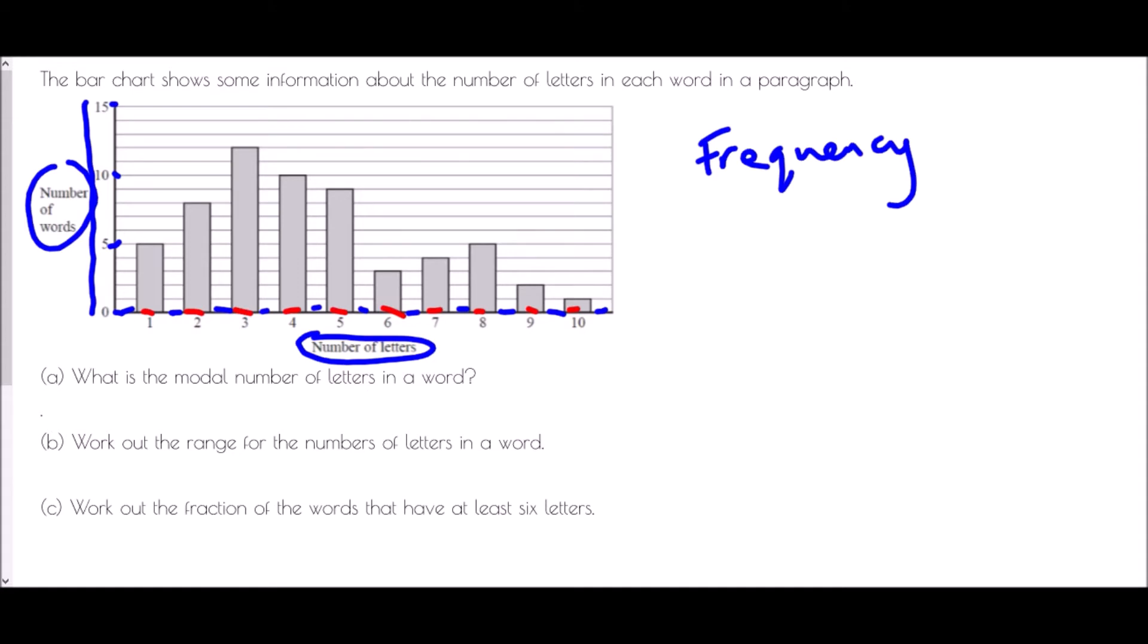So moving away from the bar chart itself to the questions. What is the modal number of letters in a word? So the word modal goes along with mode. And mode means most common. So what is the most common number of letters in a word? Well what we need to be looking at here is which of the bars in our bar chart is the tallest. Well if we have a look it's quite clearly this bar which is the tallest of all of them. And that is for three letters. And so three letters is the modal number of letters.